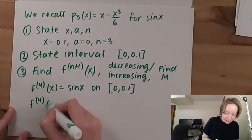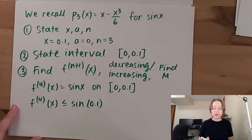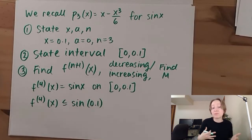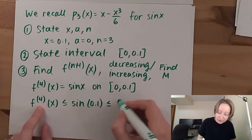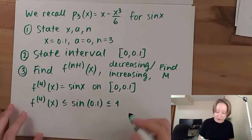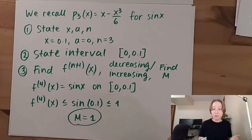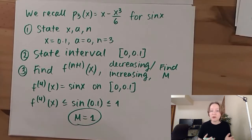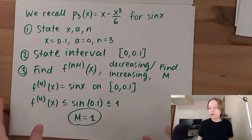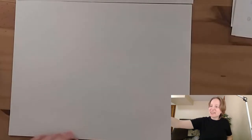So I can say that my fourth derivative of sine, which is sine, is going to be less than or equal to sine of 0.1. But I also know that sine and cosine are bounded by plus or minus 1, so this is going to be less than or equal to 1. So here M is 1. The reason I chose that is first, 1 is much nicer to deal with than sine of 0.1. The other reason is we're trying to estimate sine of 0.1, so I don't know exactly what sine of 0.1 is — it's a bit circular, but it makes sense.